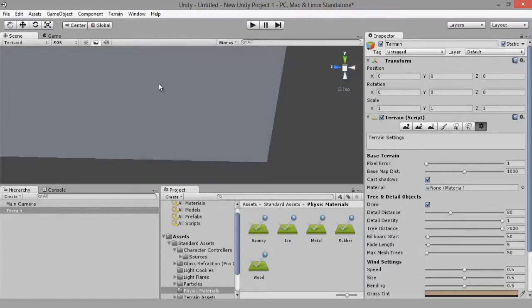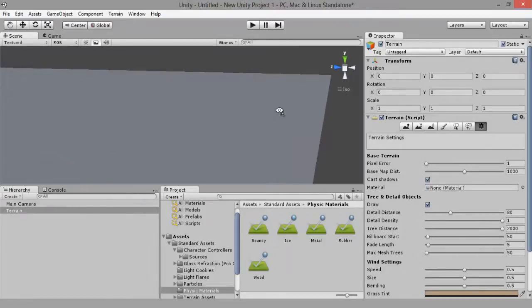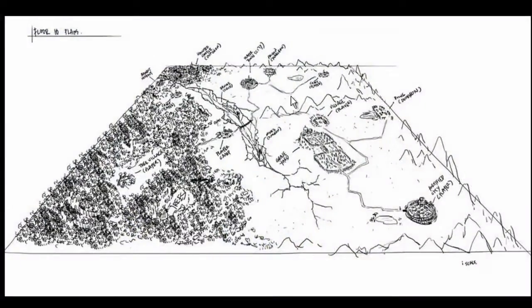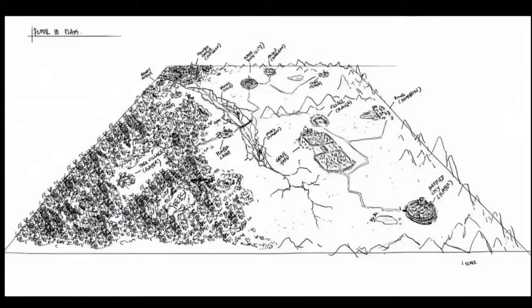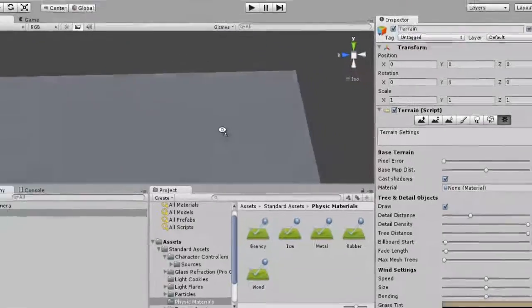So today we're going to be modeling Floor 10. I'll need to pull up a quick reference image. This is what we're going to be modeling — maybe we might not add the ravine in, depending on how we go. We'll start off here in this corner. Generally it's better to start off in a corner, because then you can sort of know where you're going. If you notice, we've got the fortified village here, so let's get on the corner.